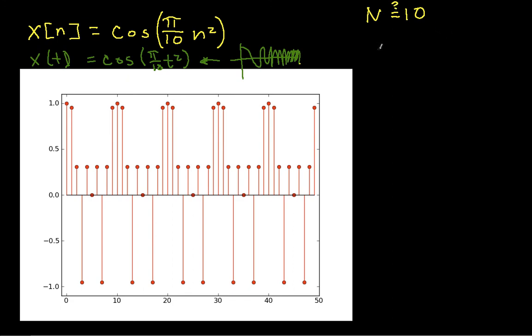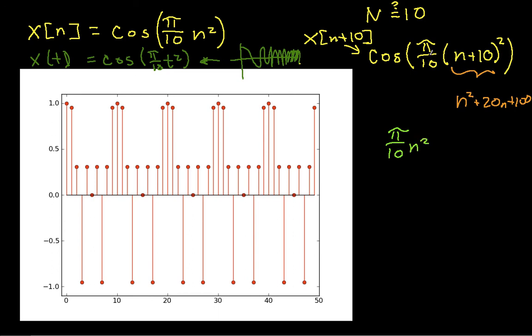And you'll notice that there's a pattern that seems to repeat itself every 10 samples, which again, I probably shouldn't confess this, but this was a real surprise to me. I was kind of taken aback by this. And so my question is, is this periodic with a period of 10? Well, let's see. We want to say cos(π/10 * (n+10)²). Again, this is x[n+N], or we're checking to see if the period is 10. I can write this (n+10)² expands to n² + 20n + 100. And so if I multiply each of these terms by π/10, I'll have π/10*n².